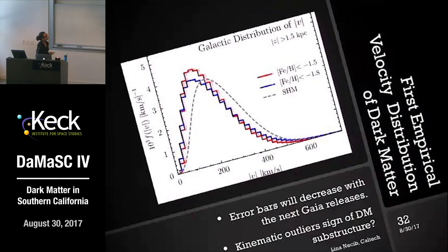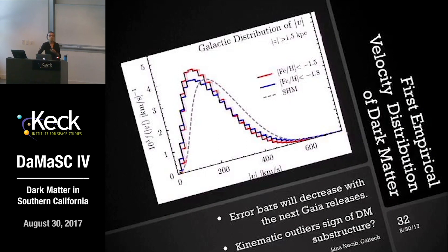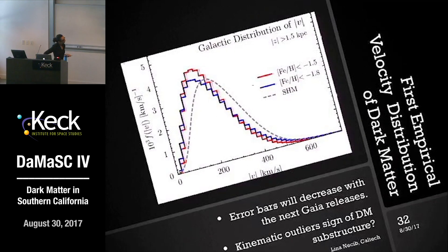To summarize: we have a new empirically-determined dark matter velocity distribution, which is exciting and new. With future Gaia data releases we will have smaller error bars, which will be very helpful. It is also important to understand whether these kinematic outliers are signs of dark matter substructure. Thank you.